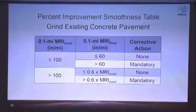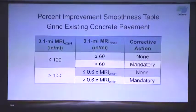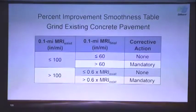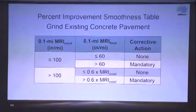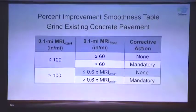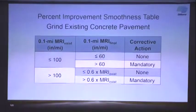The Percent Improvement smoothness table is for grinding existing concrete pavement. There are no incentives or disincentives. What's required is a 40% improvement from the existing MRI to the final MRI. If the existing MRI starts below 100, it just has to be 60 or less to be accepted.